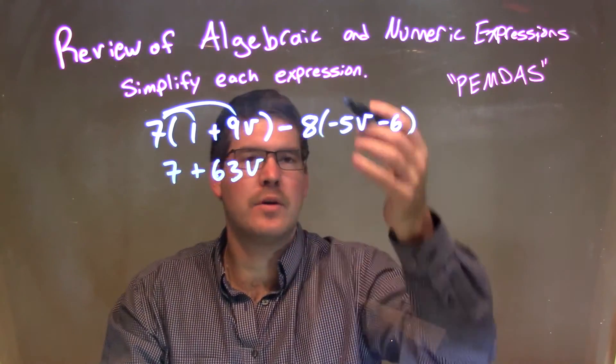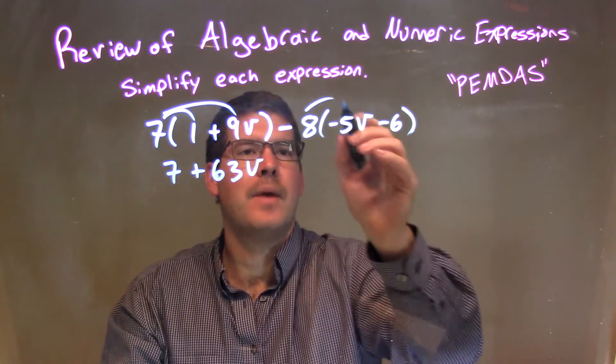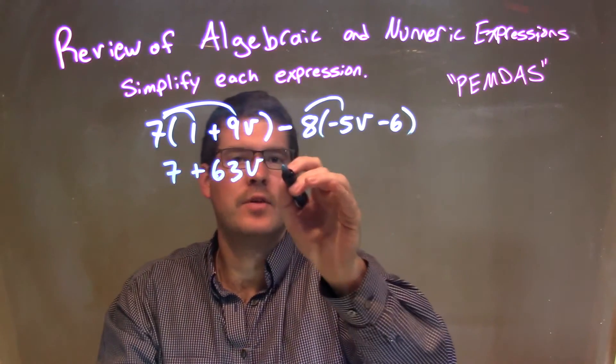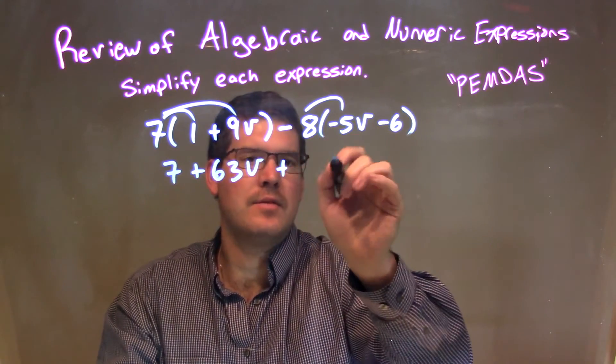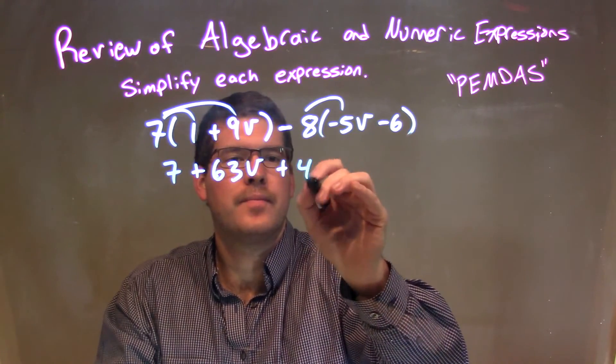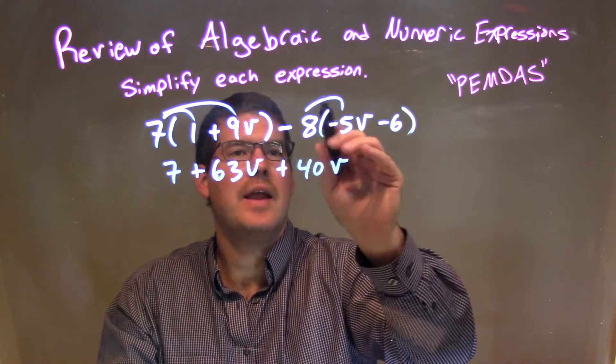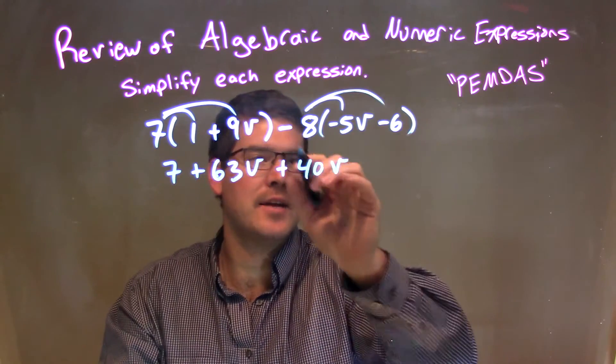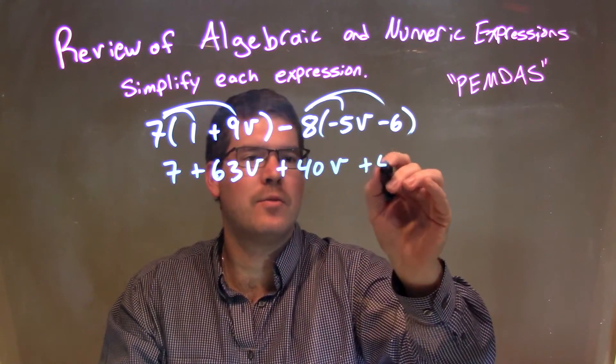We then have a minus 8. So, we're going to distribute that minus 8 across. Minus 8 times minus 5b is a positive multiplication. Negative times negative is a positive. A positive 40b. And then negative 8 times minus 6 is a positive 48.